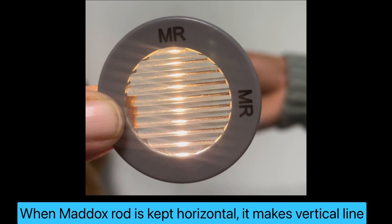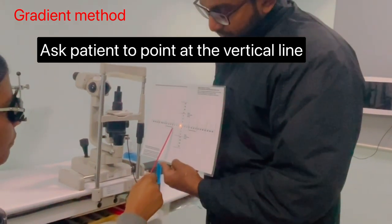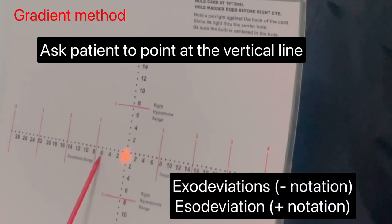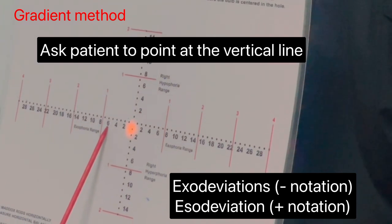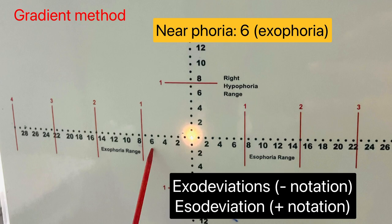When Maddox rod is kept horizontally, it is showing a vertical line. While performing the test, ask the patient to point the line seen by patient on a modified Thorrington chart. The line seen on the chart is the phoria present in the eye. Here patient pointed on six exophoria.